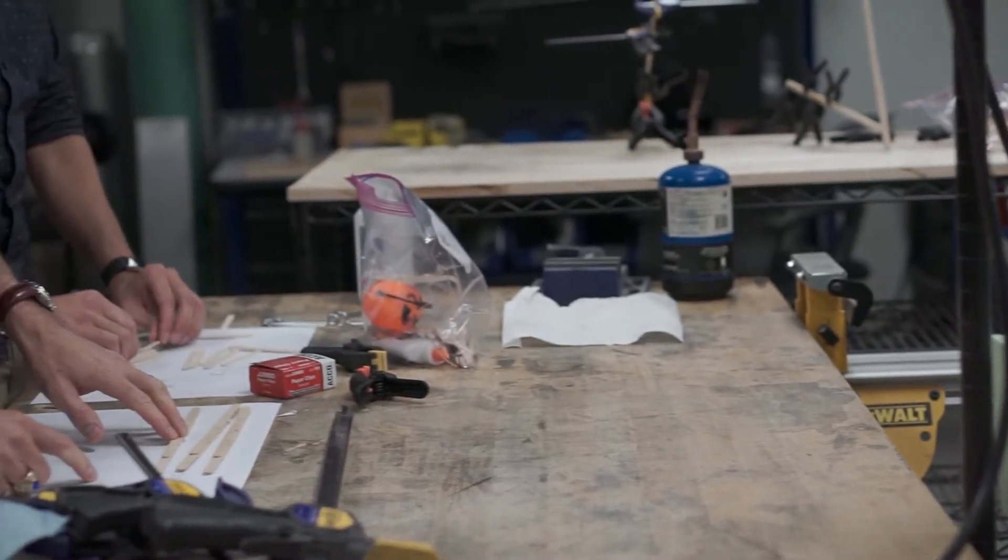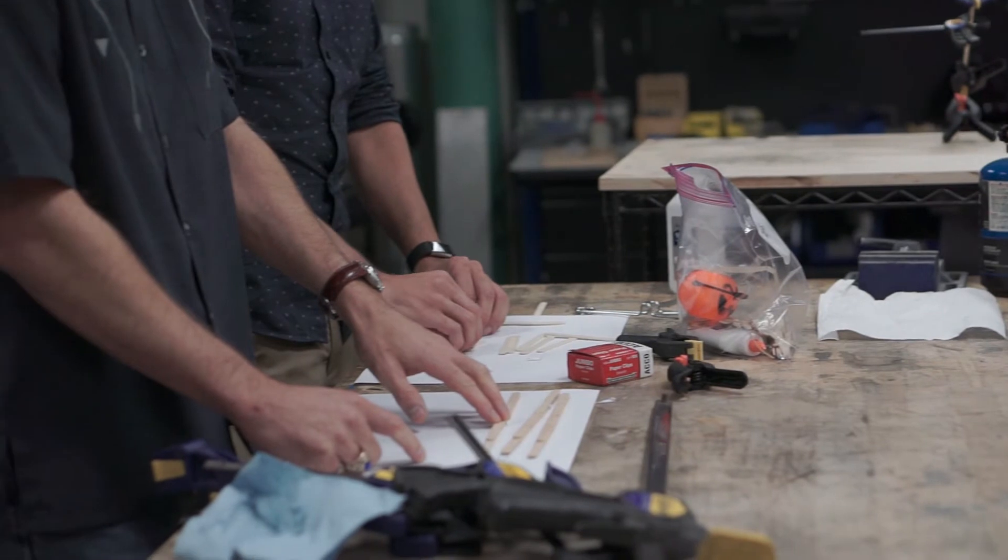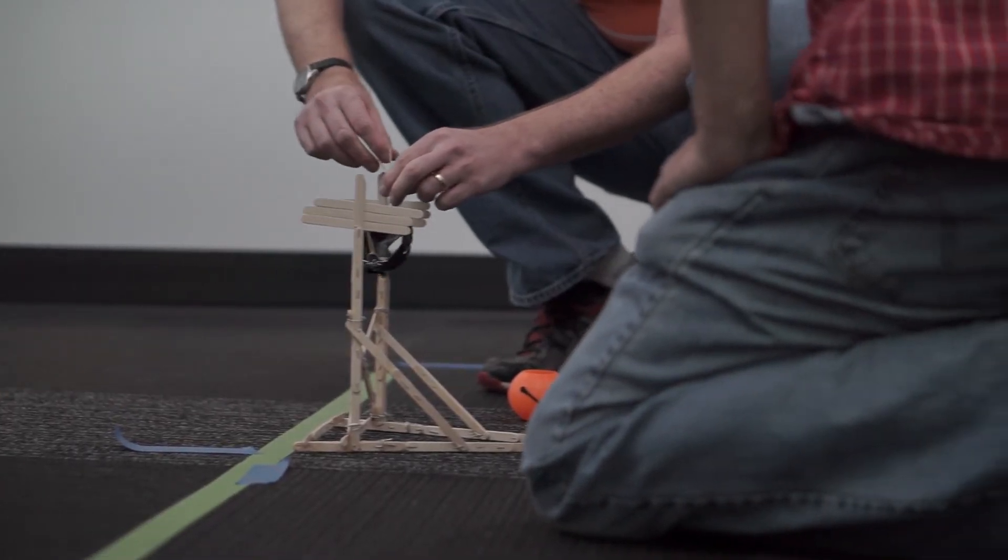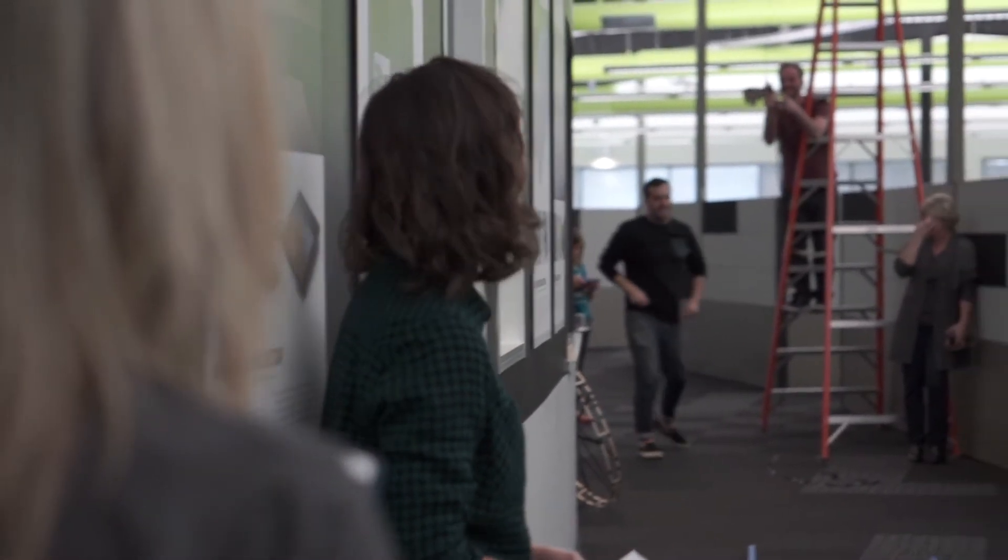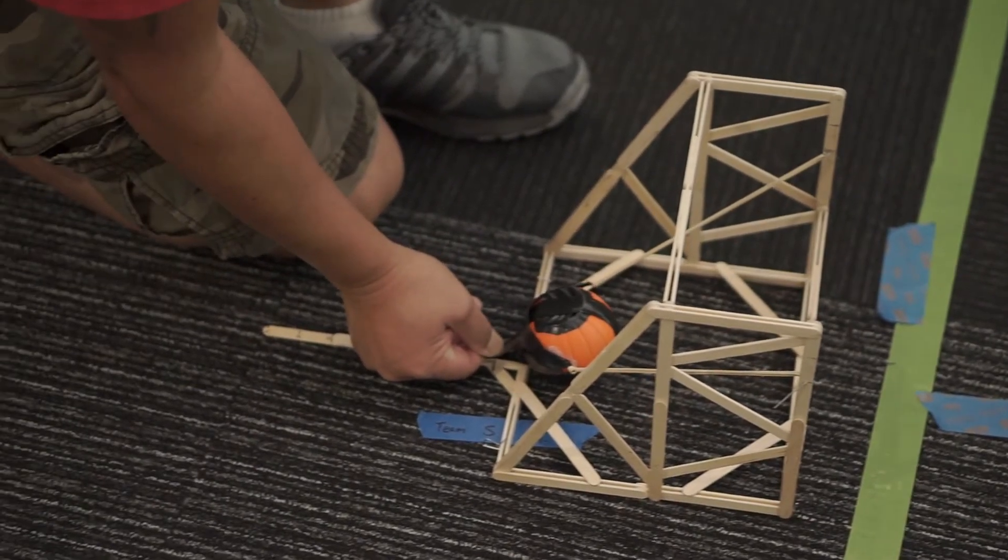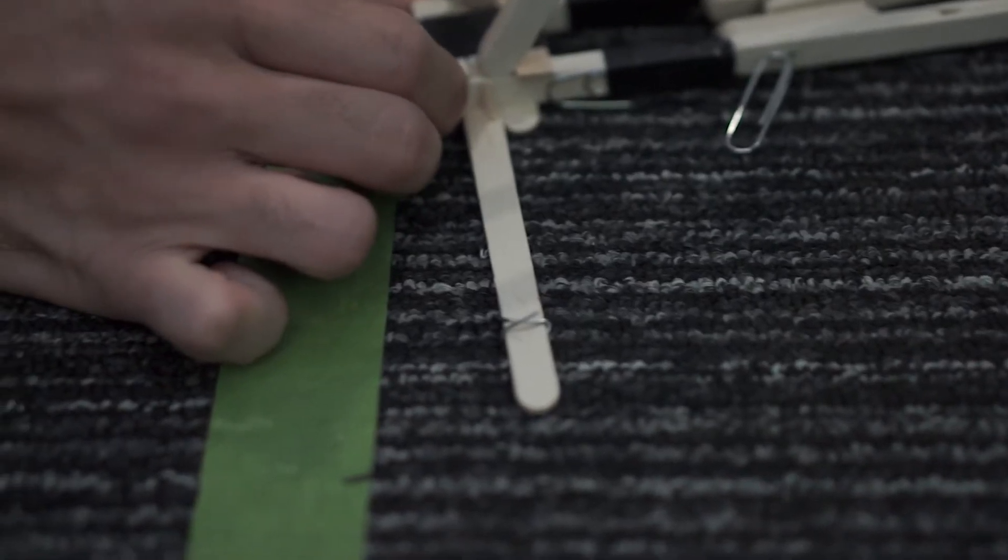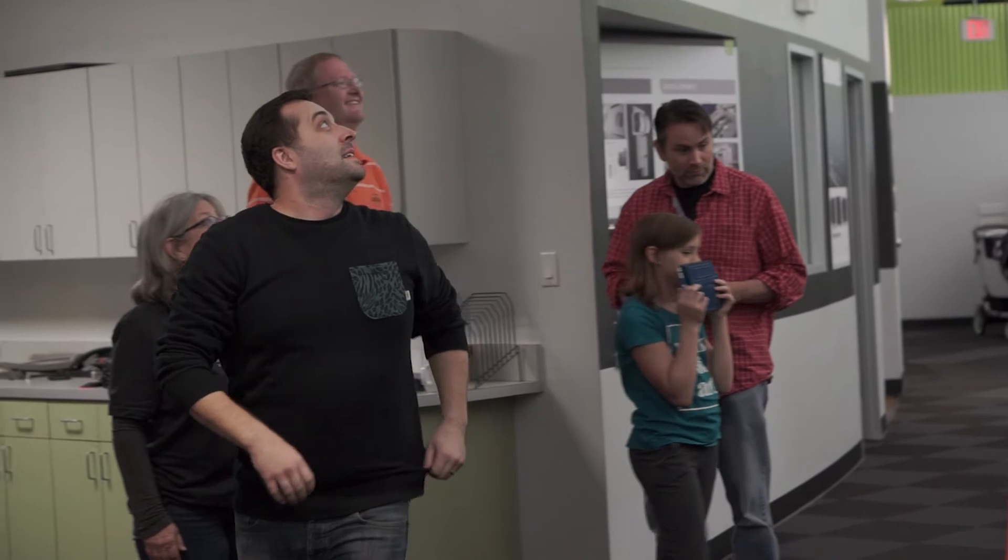You've got to build a device with the materials that you're given. The other rules are you have to put your device on the ground. You can't touch the pumpkin while your device is launching it but you can hold down or actuate the launching mechanism and then the device has to stay stationary on the ground so you can't actually physically hold it down while it's launching.